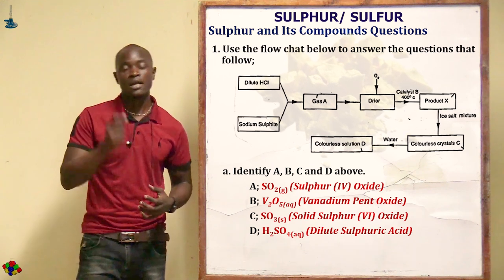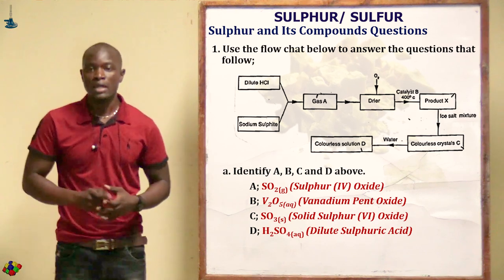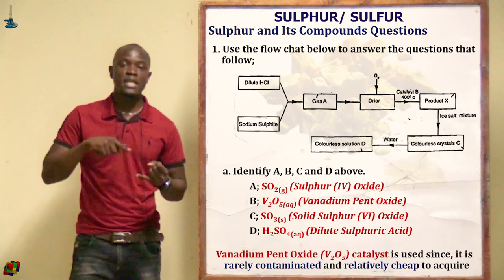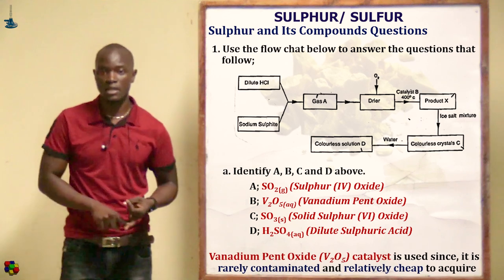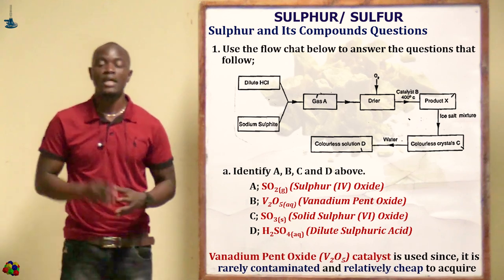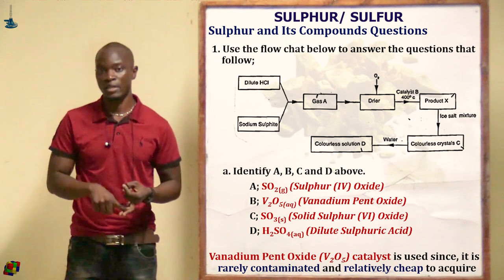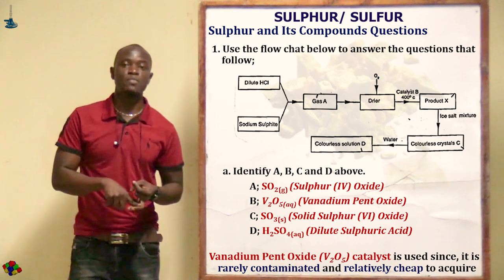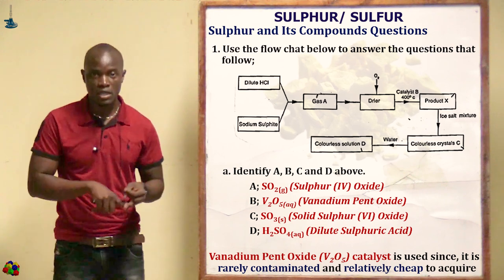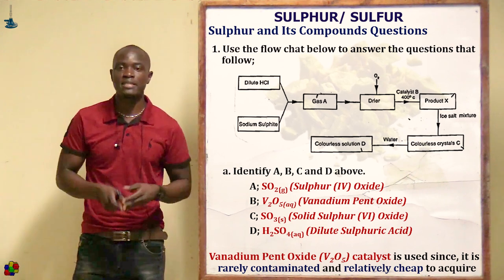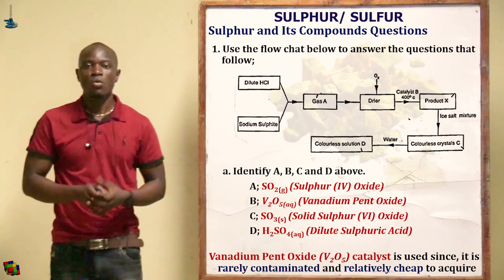Gas A is sulfur dioxide. For B, the suitable catalyst — we can use either platinum or vanadium pentoxide. Either of those two is correct. Vanadium pentoxide is preferred because it is cheaper and less easily poisoned.